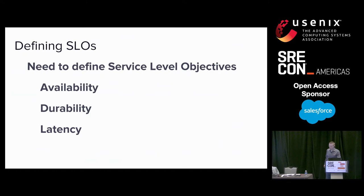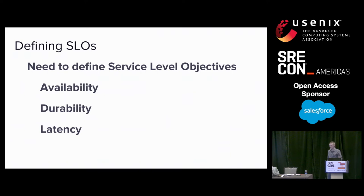When you build SLOs for a service, you need to think about, from the perspective of the things using the service, what do they care about? For Kafka, we identified the following three things: availability, durability, and latency. And if there are better Kafka experts than me out there, let us know if we missed anything or got any of these wrong.